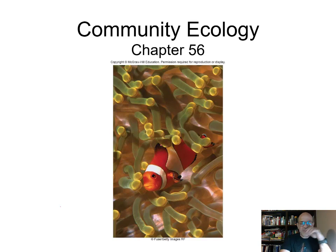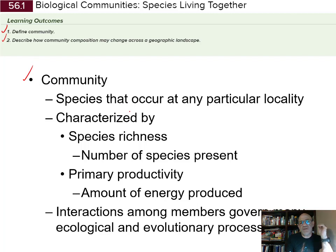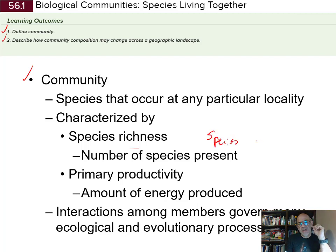There's a symbiotic relationship between the two. Biological communities are going to be different species living together. We need to be able to define a community and describe how community composition may change across a geographic landscape. Communities are species that occur at a particular location or locality, characterized by species richness — how many different kinds of species are present.